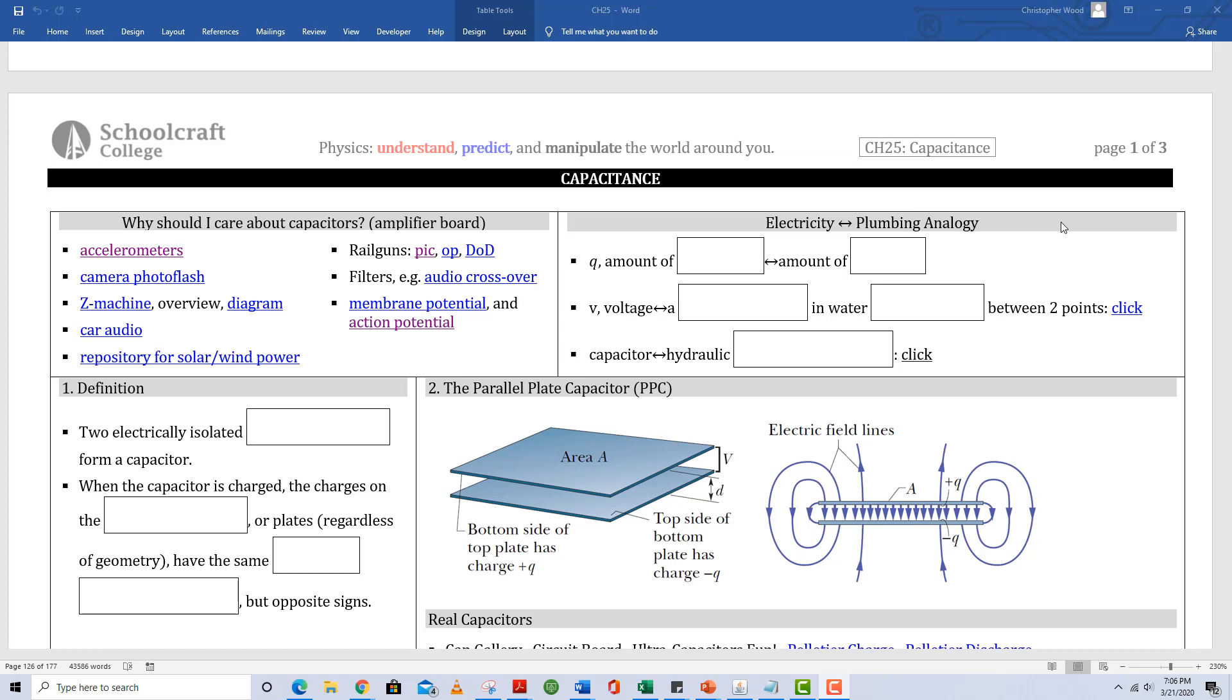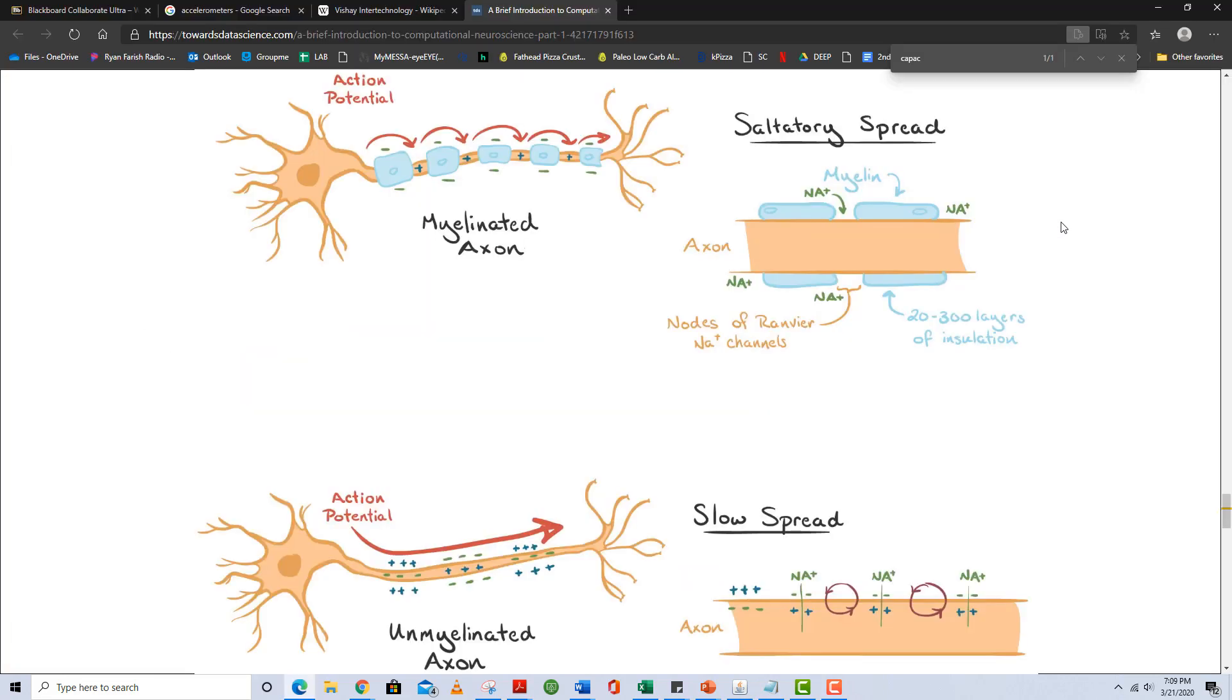Chapter 25, Capacitance. First box, why should I care about capacitors? The first answer is because they're everywhere and they're really important. Capacitance is really important in neurotransmitters, specifically in the neuron cell.